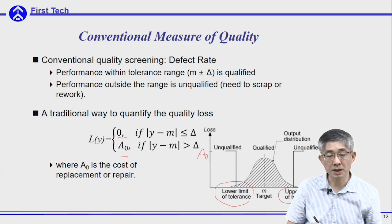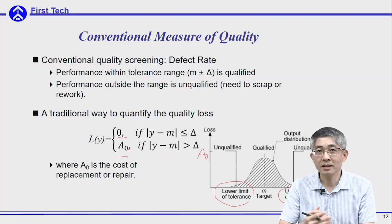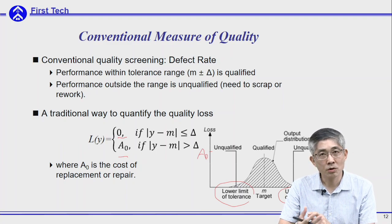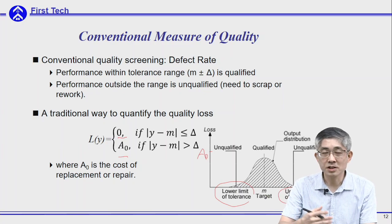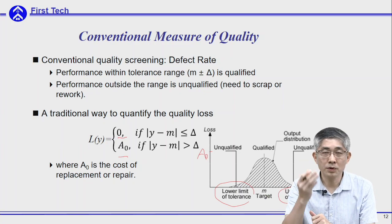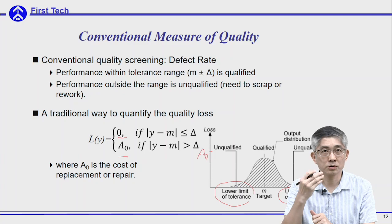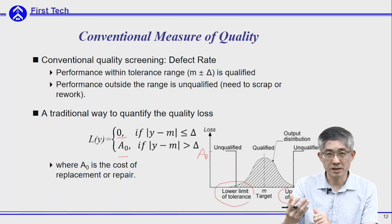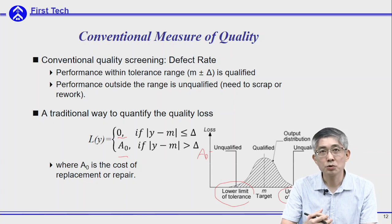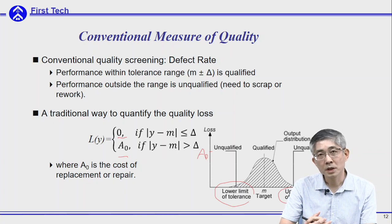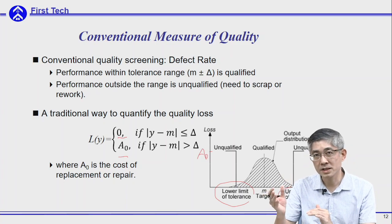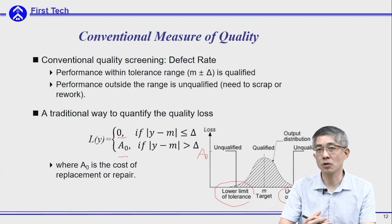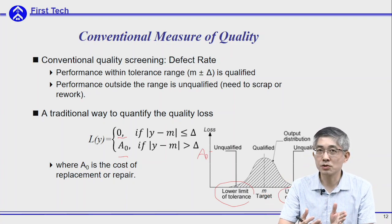I can use a very simple example. In this course, in order to pass you need a minimum of 70 points to get the credit. If you get something below 70, such as 69, you will fail this course. But if you get one point more — 70 points — you will pass the course.